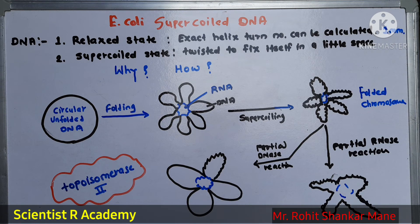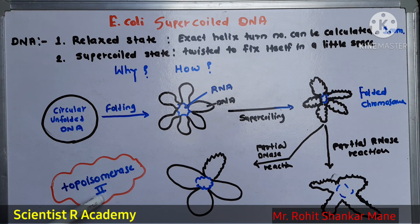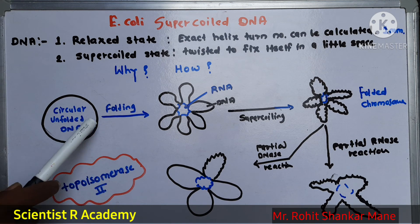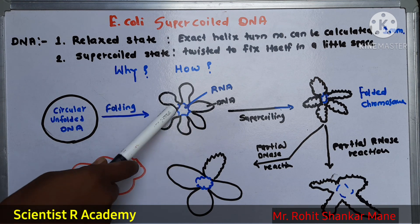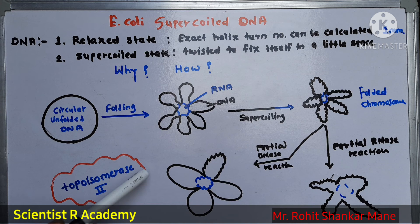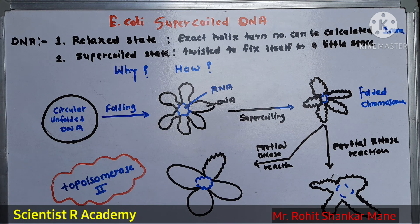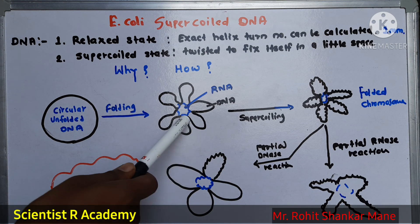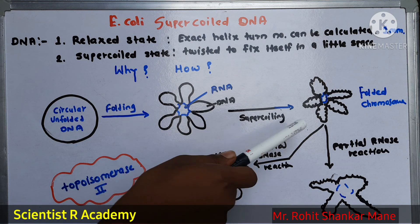How and why does supercoiling occur? This is a circular unfolded DNA, and when this unfolded DNA comes in contact with the topoisomerase II enzyme, which is also known as DNA gyrase, there is folding. The DNA folds with the help of topoisomerase II enzyme, and RNA also plays an important role during the folding. Topoisomerase II enhances its action during this process and causes the supercoiling of the DNA.